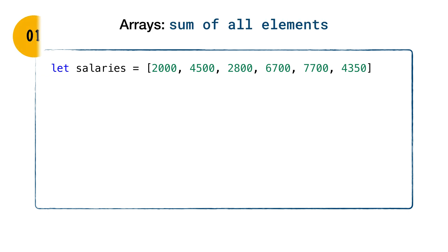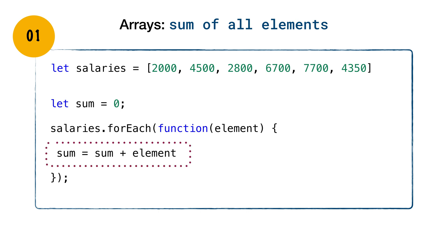One way of doing so is to have a sum variable which is initialized to zero. Then we will loop over every element in salaries array using forEach method. This method takes as argument a callback function, which is executed on every element of salaries array. The job of the callback function is to keep adding the sum to the current element in the array.